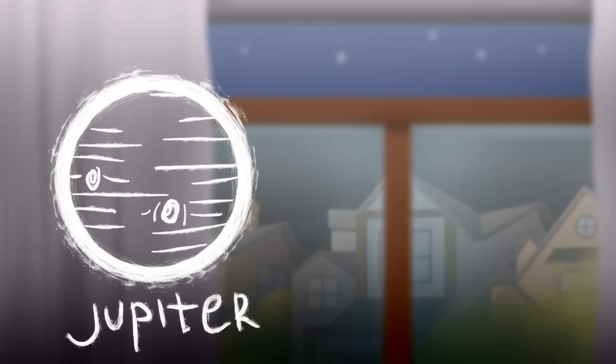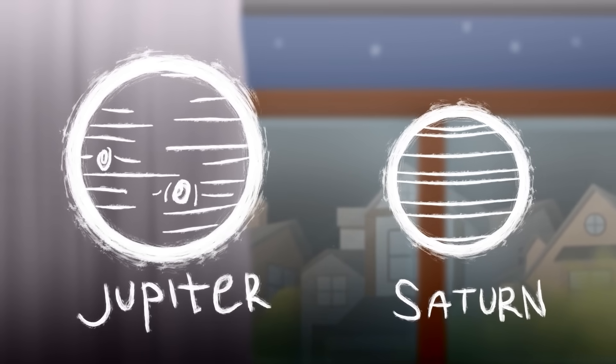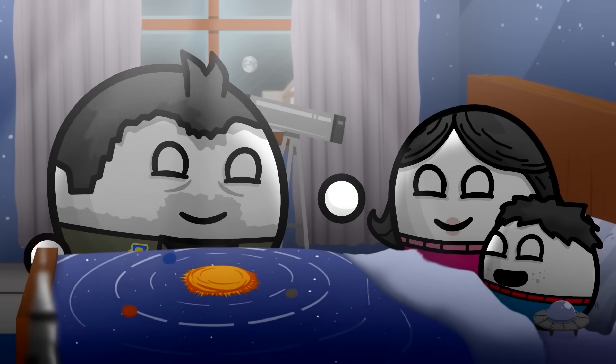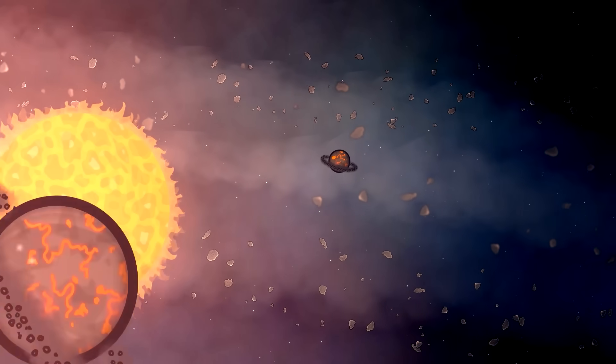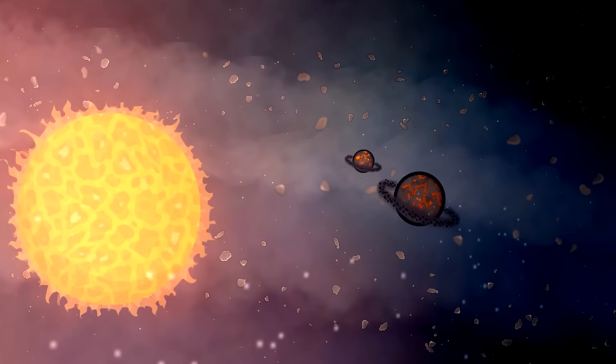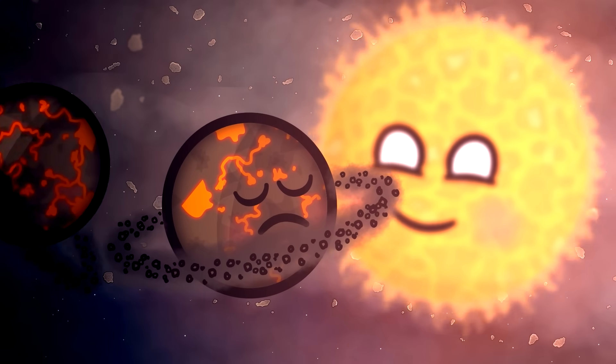Jupiter was the first planet, followed closely by Saturn. It didn't have its famous rings just yet, but a lot of these planets didn't last long. Orbits were messy and a lot of planets crossed paths with each other. So sooner or later, many planets just...